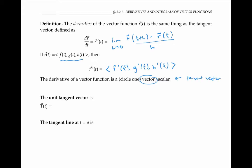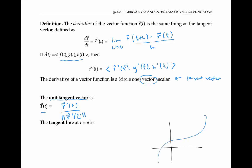As with any vector, we can normalize the tangent vector to make it have length one — that's called the unit tangent vector, denoted with a capital T. We get it by taking r prime of t and dividing by the magnitude of r prime of t. The tangent line is going to be the line that goes through the point r of a in the direction of the tangent vector.